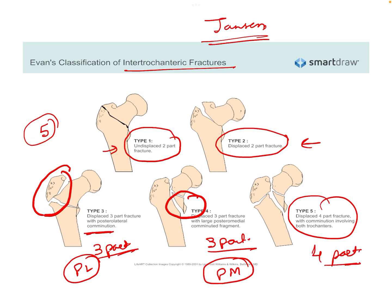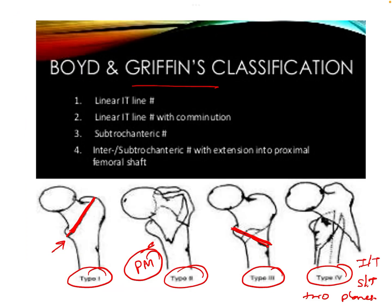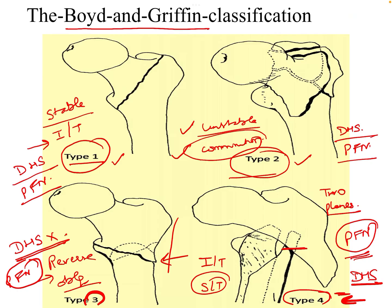So these are the three classifications most commonly used. The most important is the Boyd and Griffin classification, which classifies fractures into four types and also tells us the mode of treatment for intertrochanteric fractures.